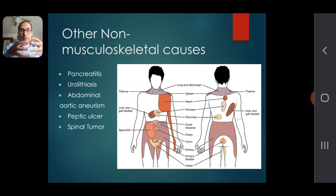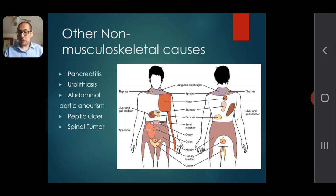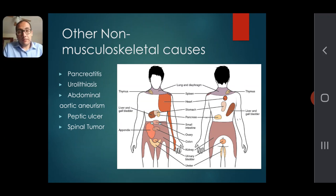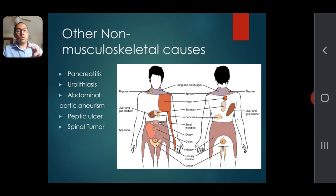If an aortic aneurysm ruptures with the extension toward the back, it can lead to back pain — that is a medical emergency and you should see a doctor as soon as possible. A peptic ulcer, which is an ulcer of the stomach, can also lead to back pain. Finally, a spinal tumor growing in the spine can push on the nerves and cause back pain.